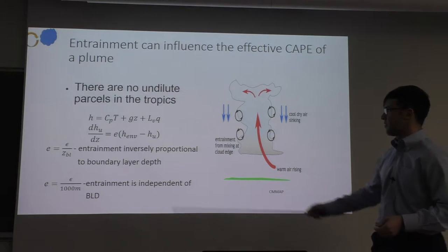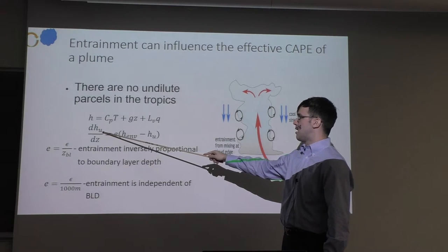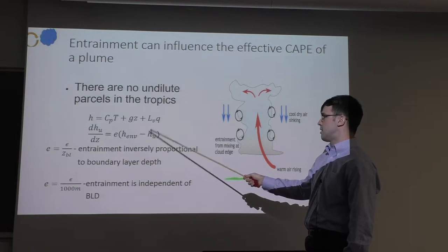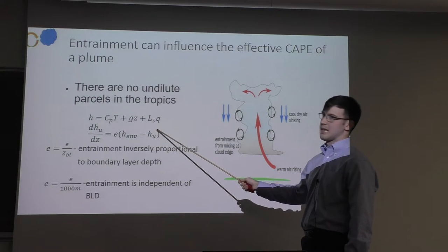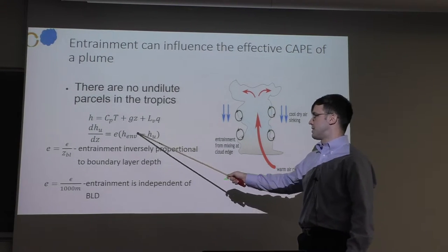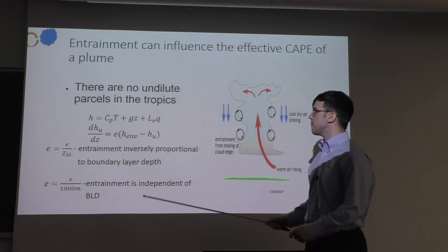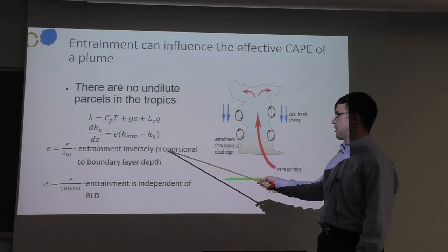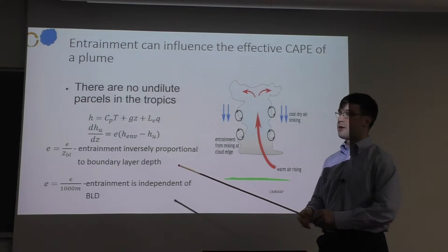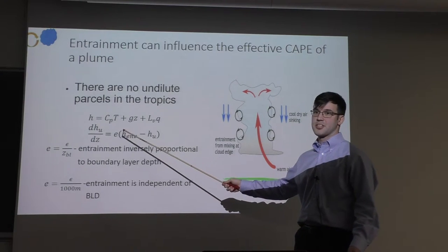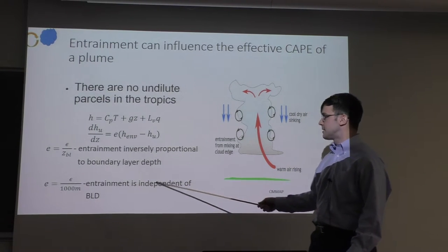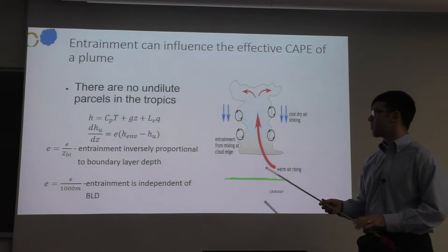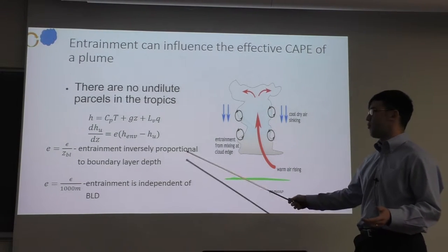We describe the rate or effect of entrainment with this plume equation: the change in moist static energy of an updraft plume with height is a function of the entrainment rate, the environment's moist static energy, and the plume's moist static energy. The environment's moist static energy is always less than that of the plume, so any entrainment rate will decrease the plume's moist static energy as it rises. If entrainment is inversely proportional to boundary layer depth, you'd expect a higher surface Bowen ratio to produce more intense convection. But if entrainment is independent of boundary layer depth, you'd expect convection to be about the same strength over land and ocean by Bowen ratio standards.